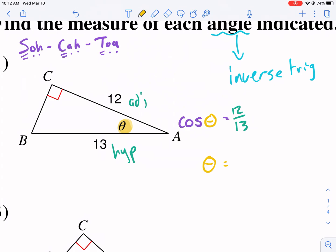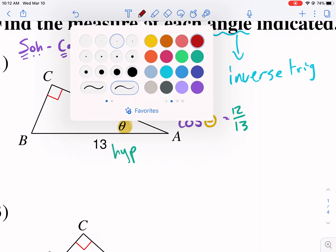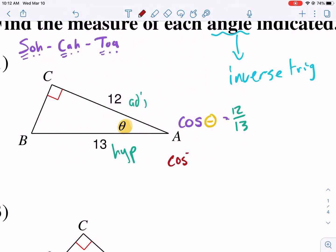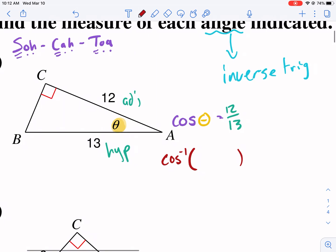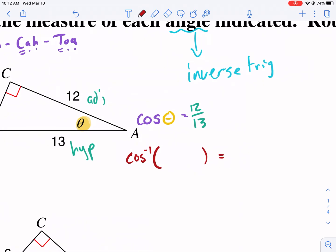Equals, and then we put 12 over 13, adjacent over hypotenuse. So what do we do from here? We have the cosine of theta. We're trying to get theta by itself. Our goal is to have theta equals something. Right now, it's being cosigned, so we have to do the opposite of cosine, which is the inverse cosine. We're going to take the inverse cosine of both sides of the equal sign to get it by itself.